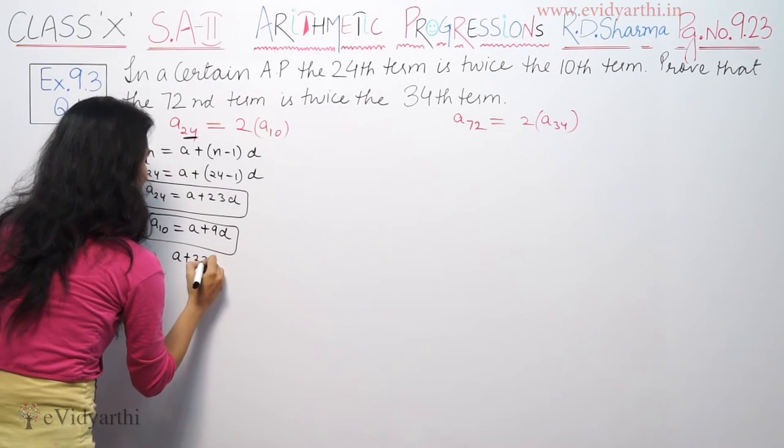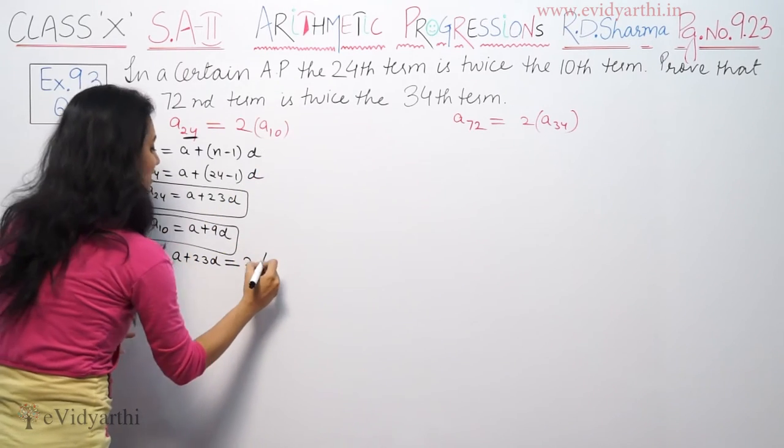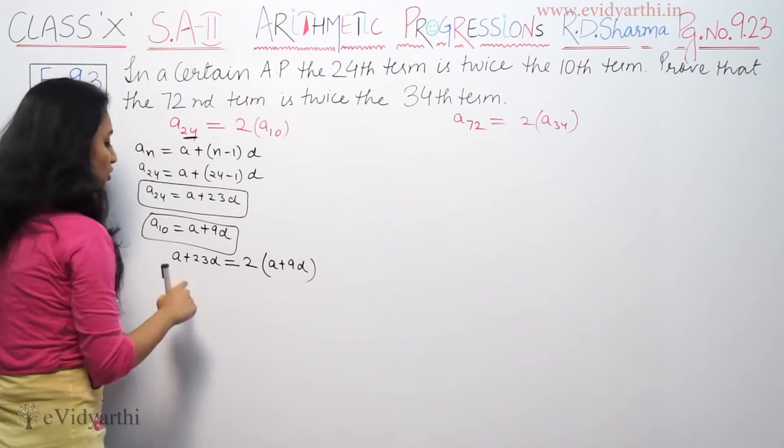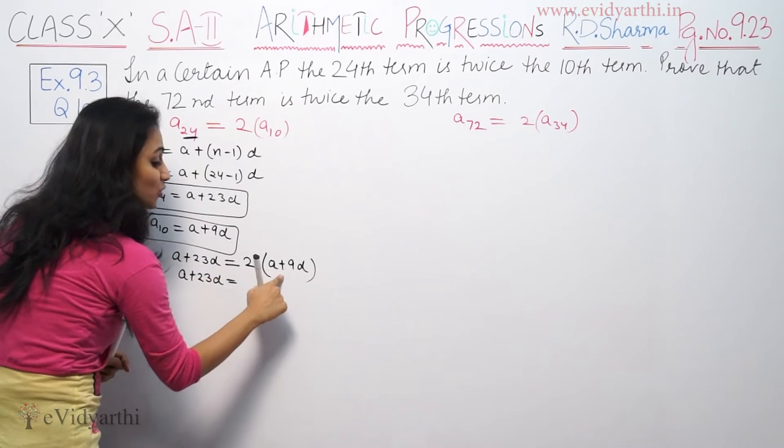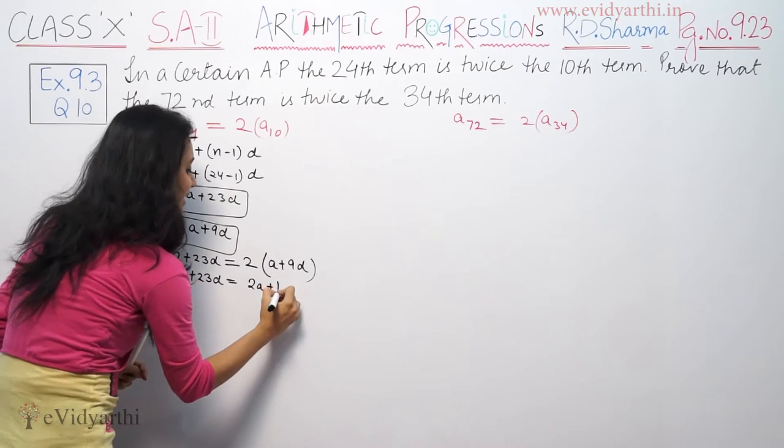A24 is A plus 23D, equal to twice of 10th term A10. We will solve this. A plus 23D is equal to 2 into A is 2A, 2 times 9 is 18D.